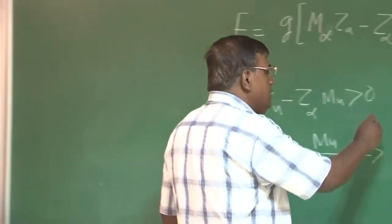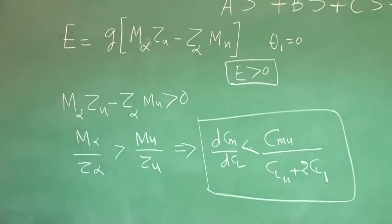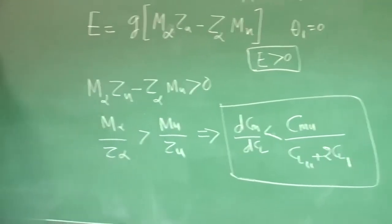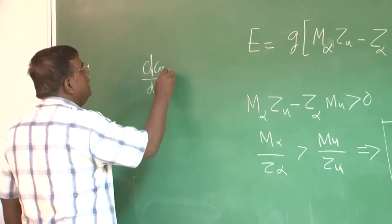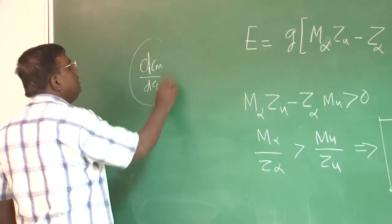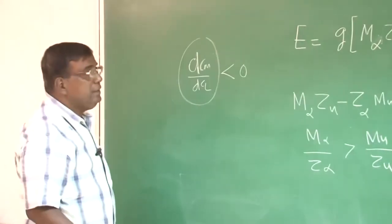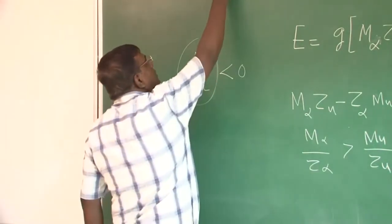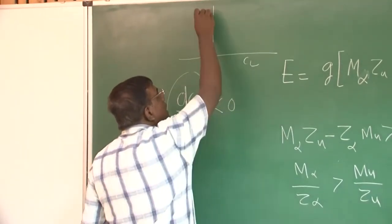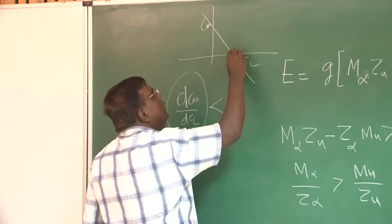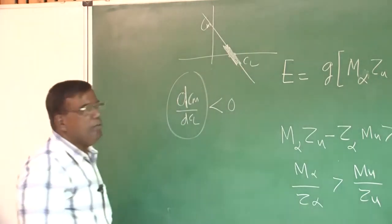Now let us see, once this is done, what is the meaning of this? What is dC_m/dC_l? Remember, the moment somebody asks dC_m/dC_l, we say dC_m/dC_l less than 0 is the condition for static stability. If you see here, again this is C_m pitching moment coefficient, this is C_l and this is the line at trim. If this slope is negative, we say the aircraft is statically stable.